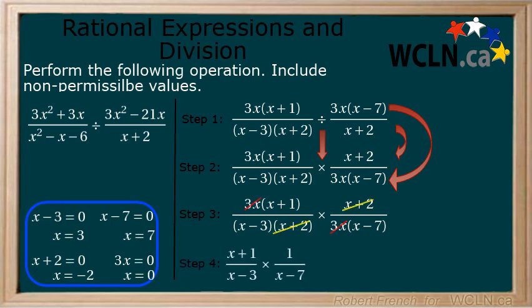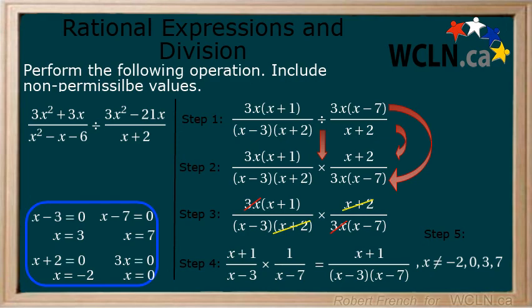Step 4: Multiply. We can now multiply our two simplified expressions together. Step 5: Include any non-permissible values with your answer. Now we have our final simplified expression with non-permissible values.